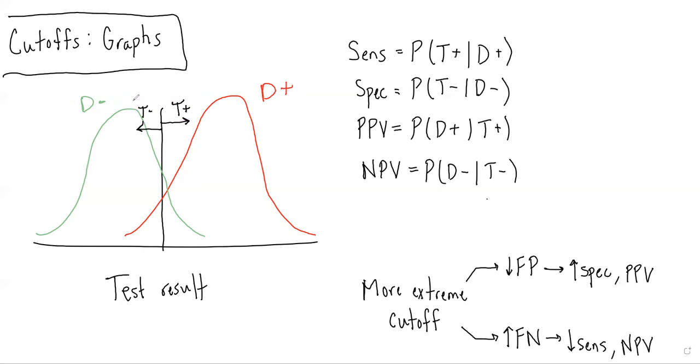So once you've been oriented to that graph, you can then figure out how sensitivity, specificity, PPV, and NPV are represented. So again, as a reminder,